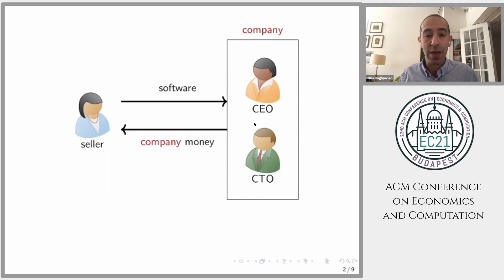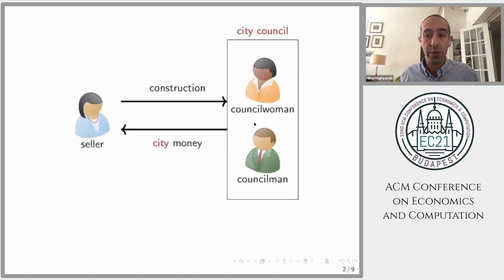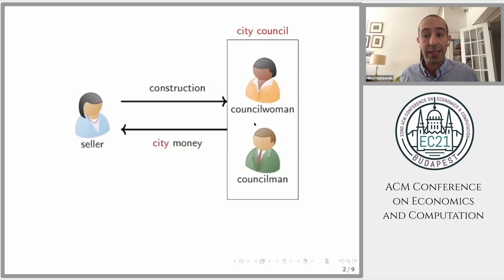There are many other examples with these features. A daycare who sells childcare services to a household who pays using household money. Or a contractor who sells construction services, like for roads and bridges, to a city council who pays using city money. In all these examples, what is common is that the product is sold collectively to the group, and the group collectively pays from a collective pool of money, not individual pockets.